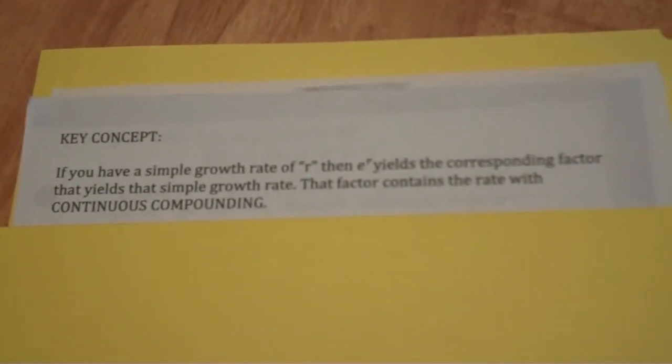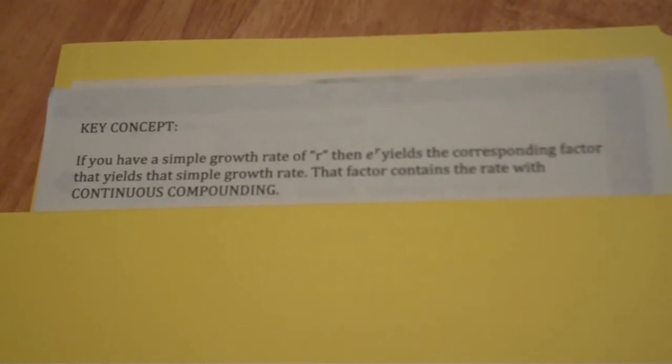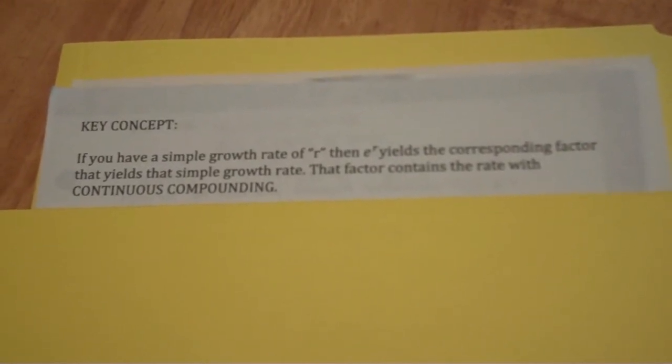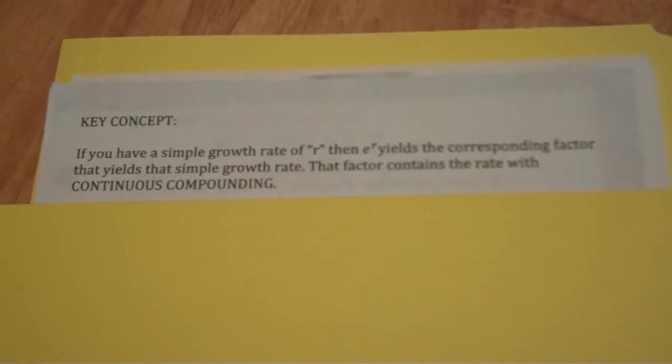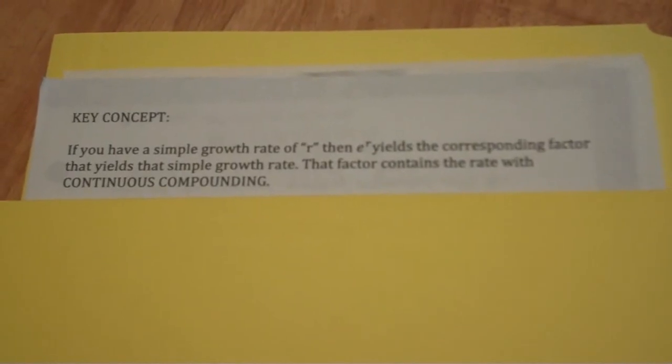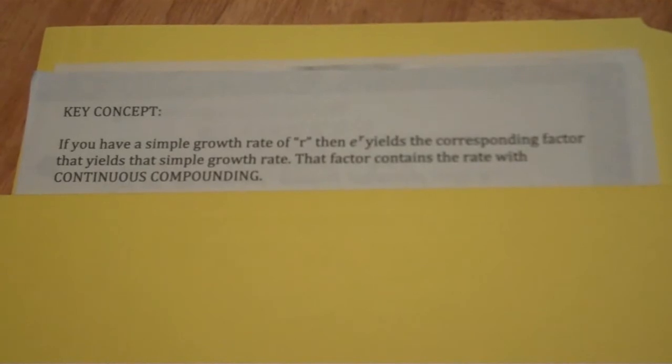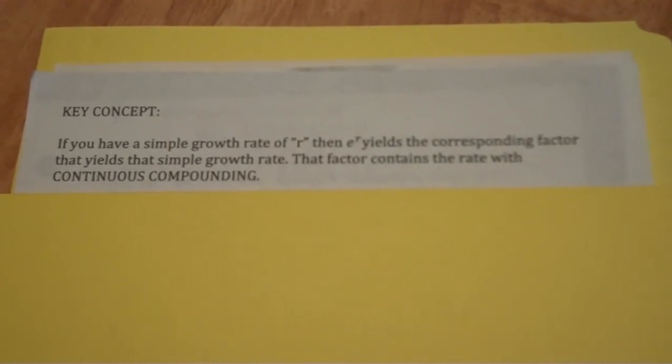It is game day after all, so go Gamecocks. The key concept when we're talking about continuous compounding is that you must remember that if we have a simple growth rate of r, then e to the r power yields the corresponding factor that contains the rate with continuous compounding. Let's look at an example to make this more simple.